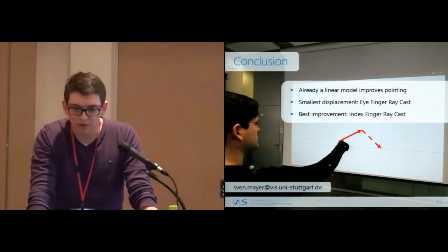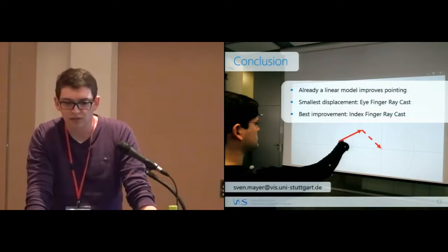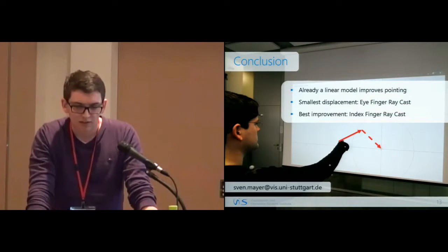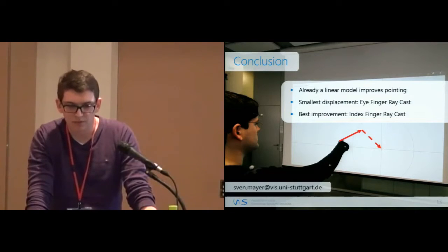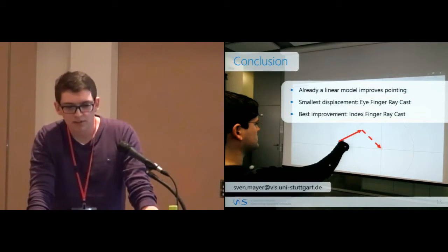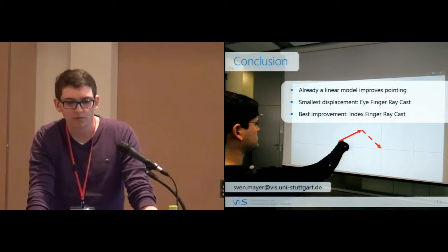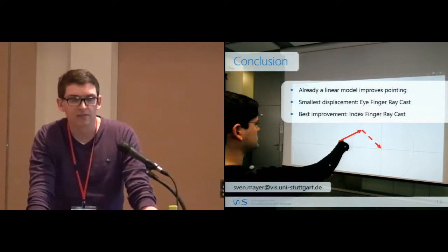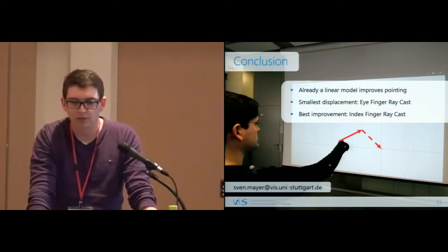To conclude, we ran an experiment to collect data and we calculated different models. Already the linear model had an improvement for distant pointing. The smallest distance was when using eye-finger raycasting, and the best improvement we had when using index finger raycasting. Thank you for your attention, and I'm happy to answer your questions.